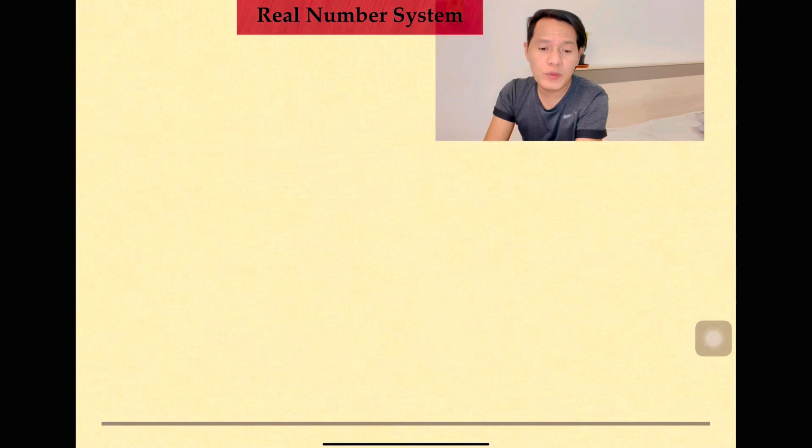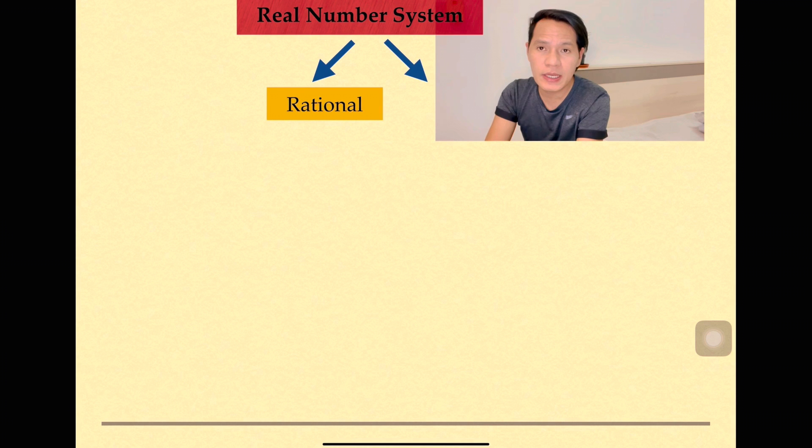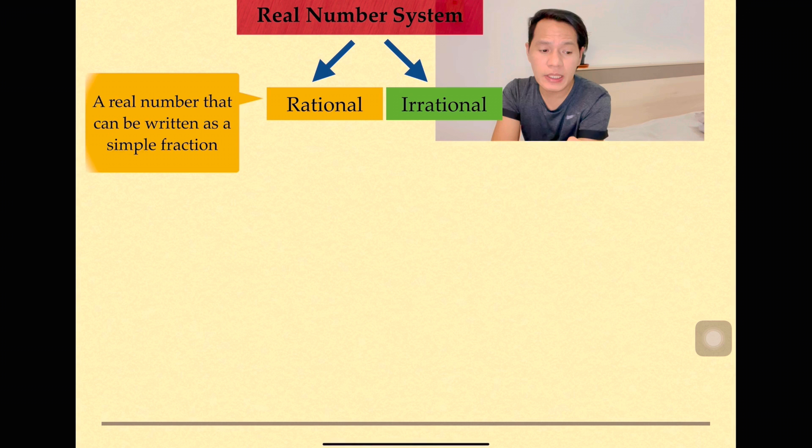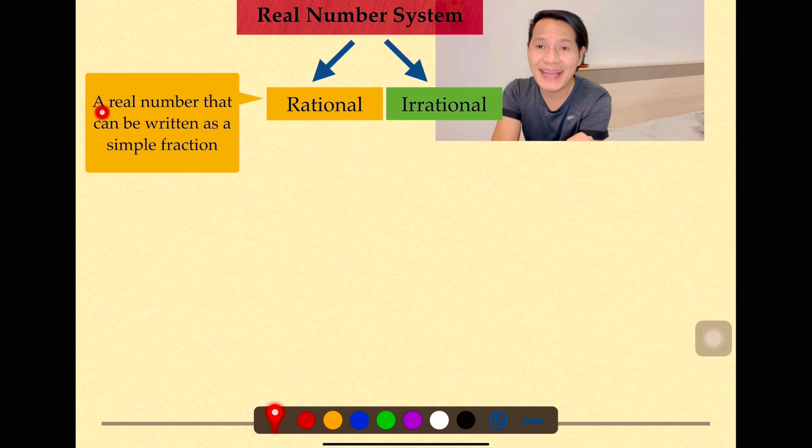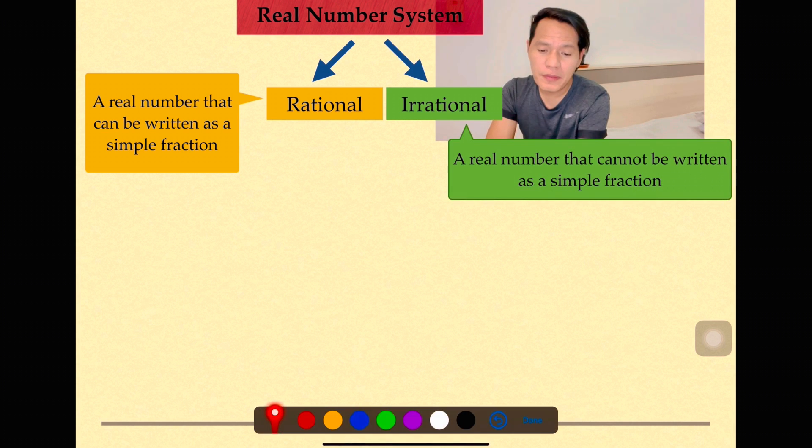When we say real number system, this is subdivided into two: rational and irrational. Rational numbers are real numbers that can be written as a simple fraction. In other words, we can write this number in a fractional form. Irrational numbers are real numbers that cannot be written as a simple fraction. Now let's start working with the rational numbers.